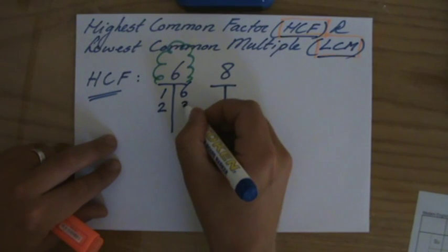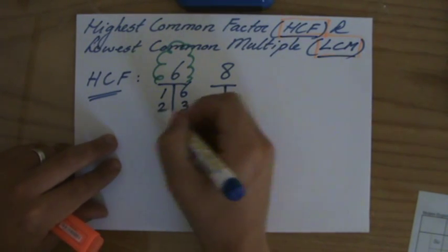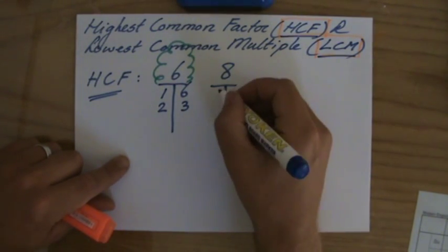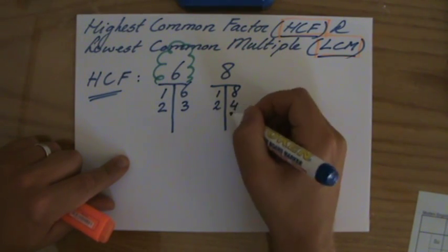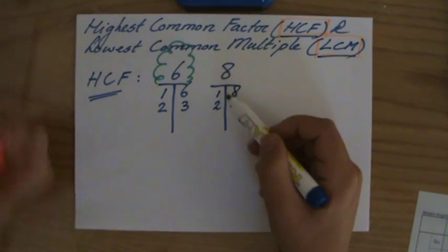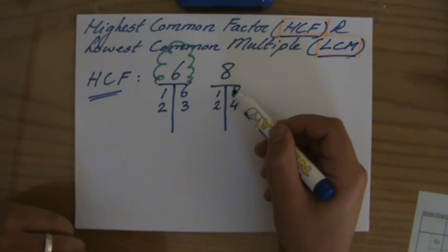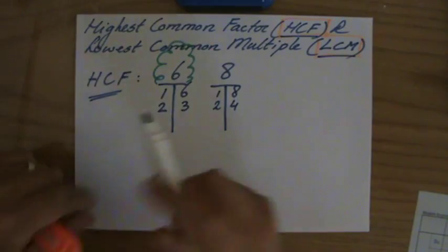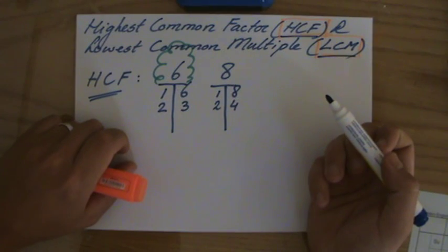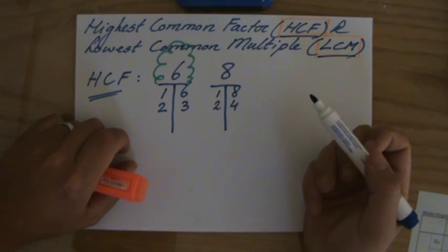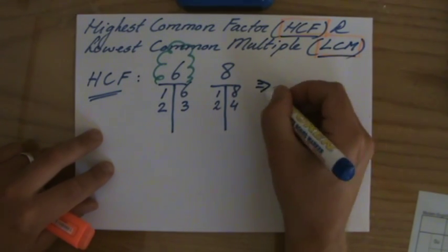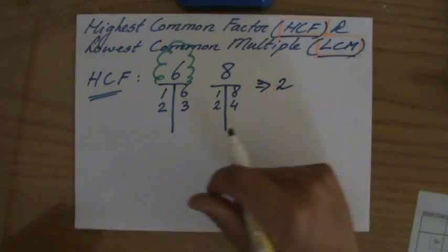So 6 has four factors: 1, 2, 3, and 6. Now for 8: one and eight, two and four, three gives nothing — so 8 also has four factors: 1, 2, 4, and 8. What is the highest common factor? They both have 1 in common, but that's not the highest. The highest common factor of 6 and 8 is 2.